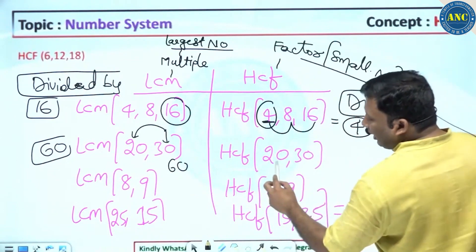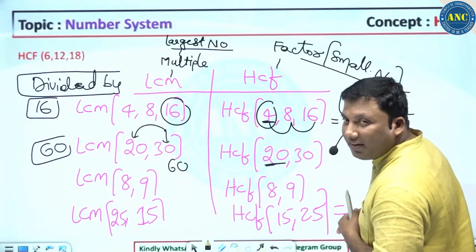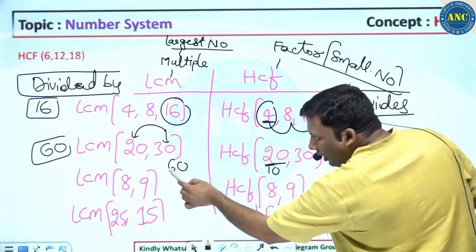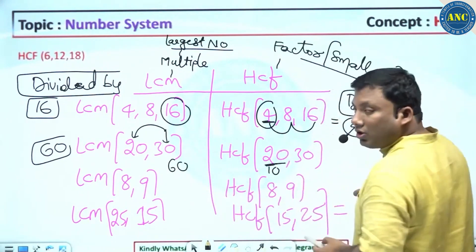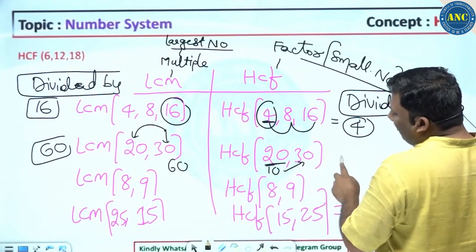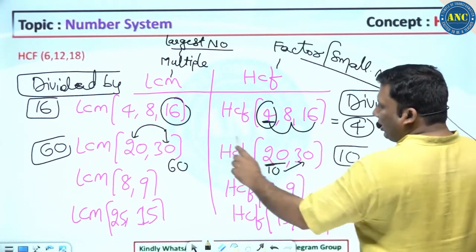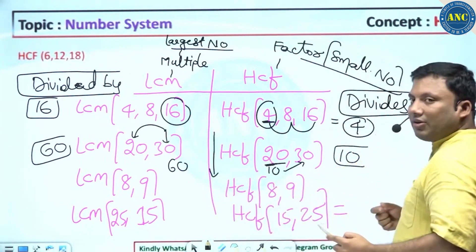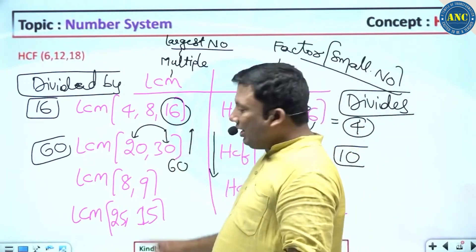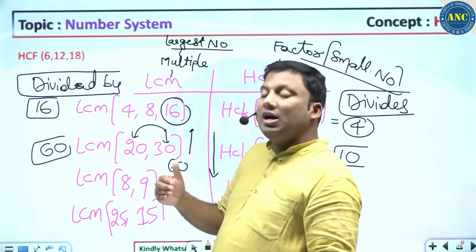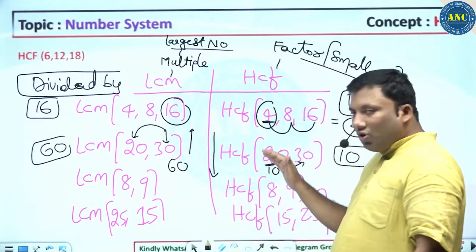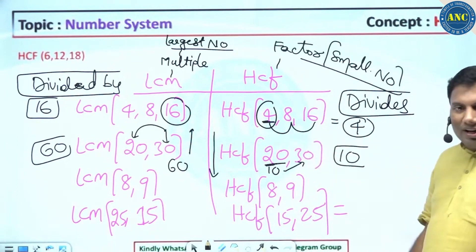For HCF of 20 and 30: take the smallest number, which is 20. Does 20 divide 30? No. So take the factors of 20. Factor 10 — does 10 divide 30? Yes. So HCF is 10. In HCF, go to the factors of the smallest number. In LCM, if the largest is not divisible by all others, go to the multiples of the largest. Factors of the smallest for HCF; multiples of the largest for LCM.